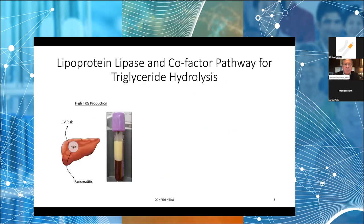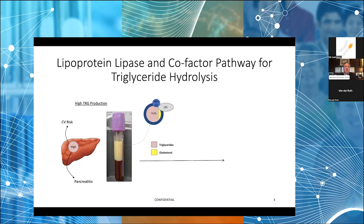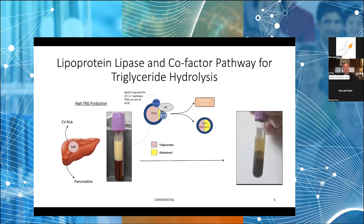Let me start with the lipoprotein lipase pathway. What I'm showing you here is a liver and a tube of blood containing chylomicrons. After a high-fat meal, we metabolize chylomicrons and VLDL using LPL to hydrolyze the triglycerides along with two cofactors, ApoC2 and ApoA5. This ultimately leads to clearance of those triglycerides into free fatty acids cleared by the liver — a well-established pathway for how we handle dietary triglycerides.